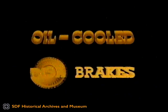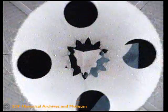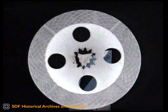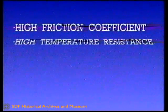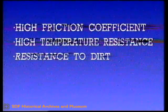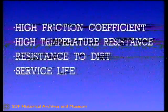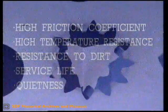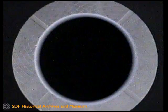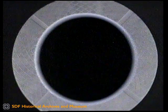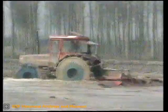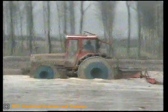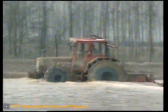The oil-cooled disc brakes on all our models have friction linings made of graphite-based sintered material, which has proved to be the most suitable for simultaneously satisfying the requirements of high friction coefficient, high temperature resistance, resistance to dirt, long service life, and quietness. The friction surface of the brakes has suitable grooving to allow passage of the oil in which they are immersed, thus ensuring efficient cooling of the discs — reliable, safe brakes for the most demanding uses, free from overheating and wear, and protected from dust and mud.